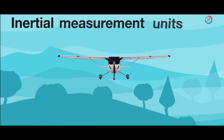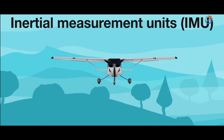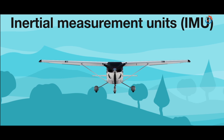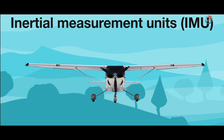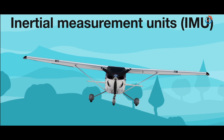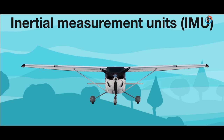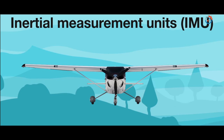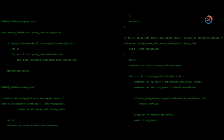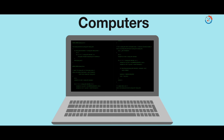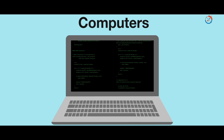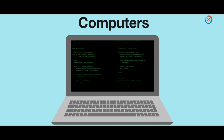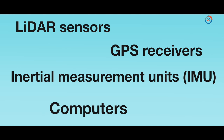Inertial Measurement Units, or IMU, track the orientation and speed of the airplane as it flies. Elevation calculations use orientation to accurately determine the actual position of the pulse on the ground. Computers record all of the height information as the LiDAR scans the surface. These four parts of the LiDAR system work together to produce highly accurate and usable results.